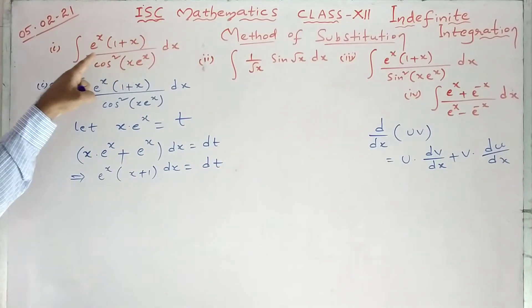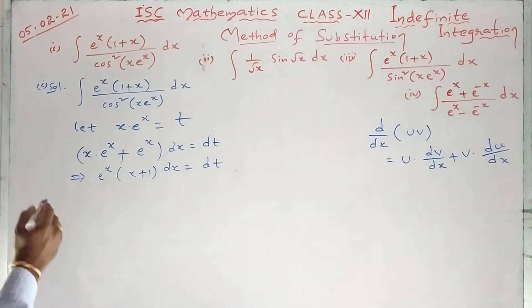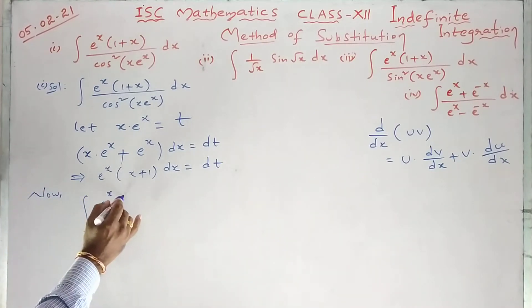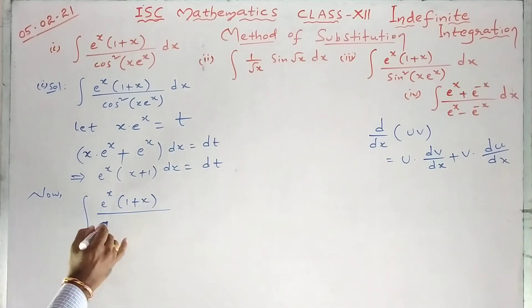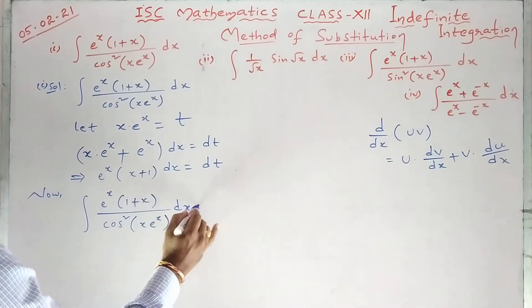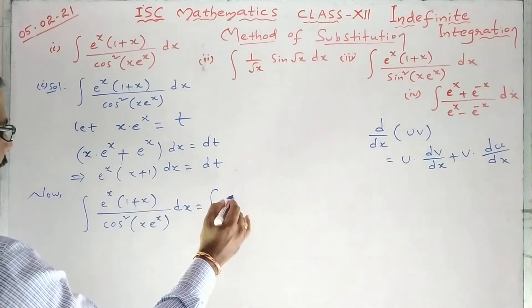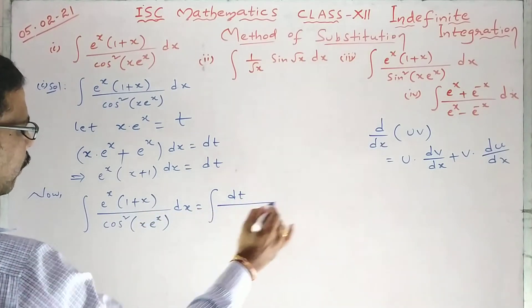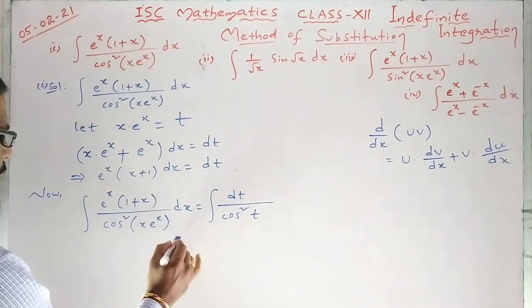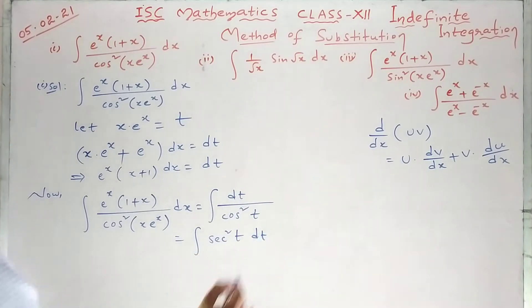Hope we got the numerator term. You see here e^x into (1 plus x) dx — instead of that, we can write dt. So the integral of e^x into (1 plus x) upon cos squared of (x e^x) dx becomes integral of dt upon cos squared t, which is integral of 1 over cos squared t, meaning secant squared of t dt.